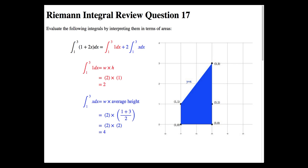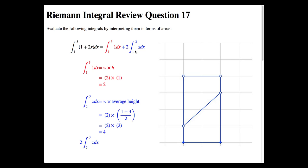So in this case we have a width of 2 and the average height of 2, which gives us an area of 4. Now remember, this is 2 times this integral, so we could simply take the answer that we had previously, which was 4, and multiply it by 2.